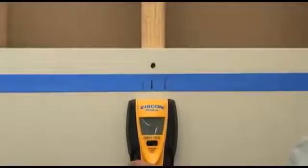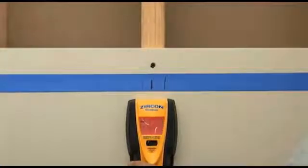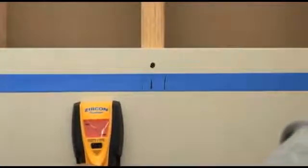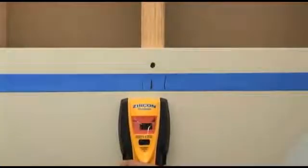If you happen to start over a stud and move away, the unit will self-correct and calibrate again on its own. An arrow on the display will indicate the direction of the stud.